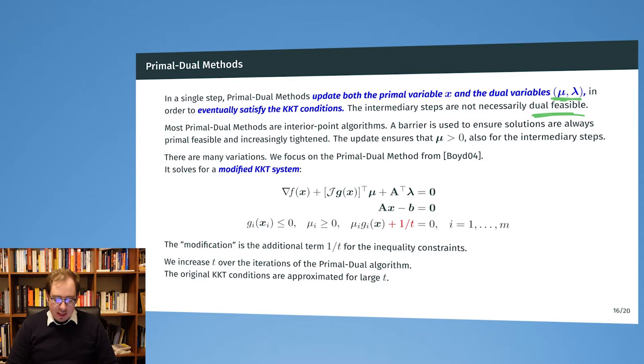There are actually many primal-dual algorithms. Here we will use a particular one also from Boyd's book. What this does is it solves for a modified KKT system, so here we will have a modification with an additional term 1/t added. This plays a role that is similar to the barrier that we saw in the first interior point method. The t will also be increased over time, and for very large t we will then return to something that closely approximates the original KKT system.